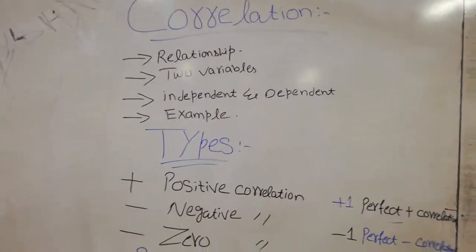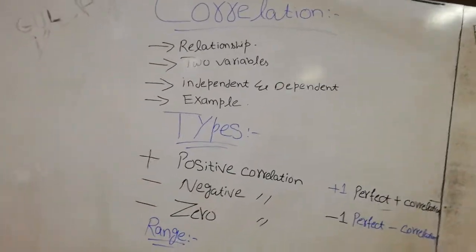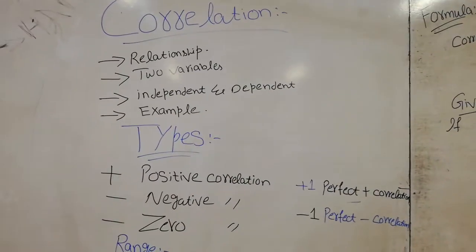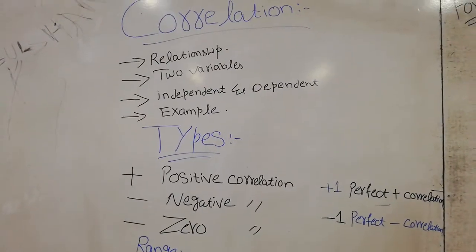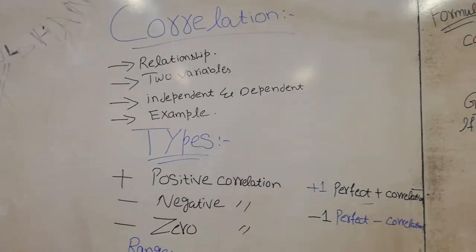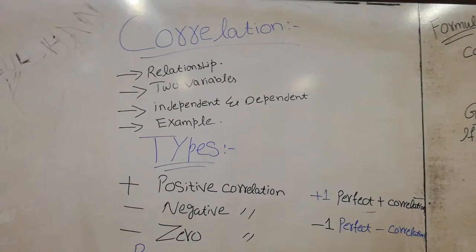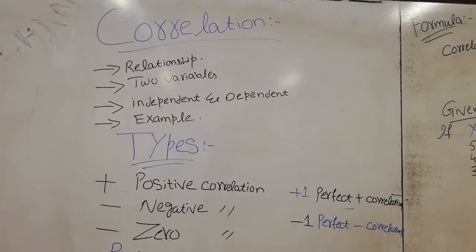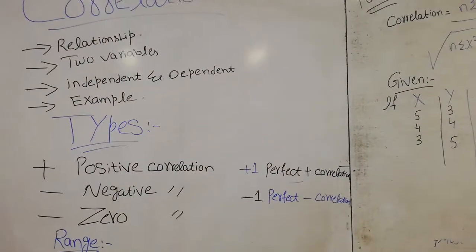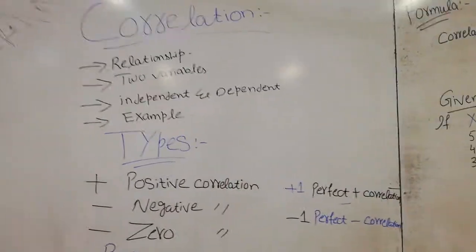The main thing is that there are three types of correlation. Number one is positive correlation. Positive correlation is when the two variables move in the same direction — both move upward or both move downward. If your answer is plus one, then we call it perfect positive correlation.